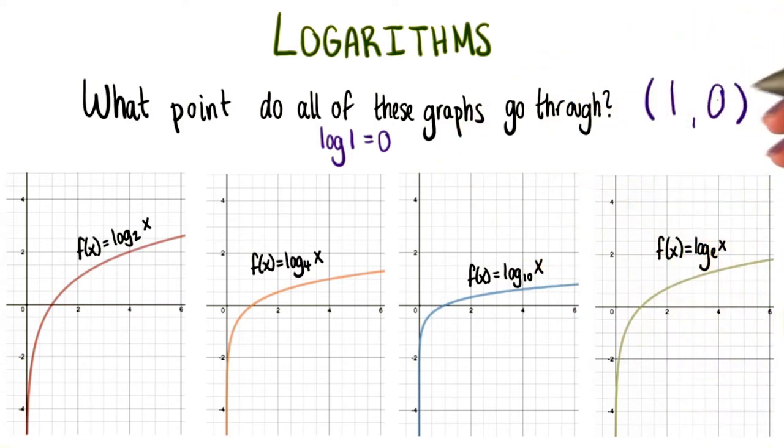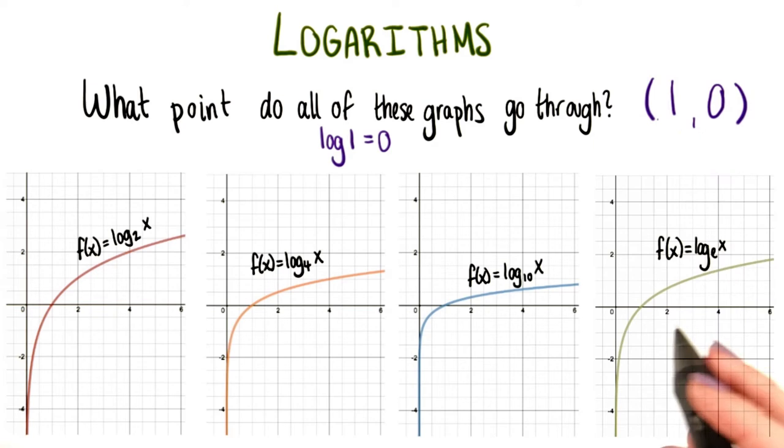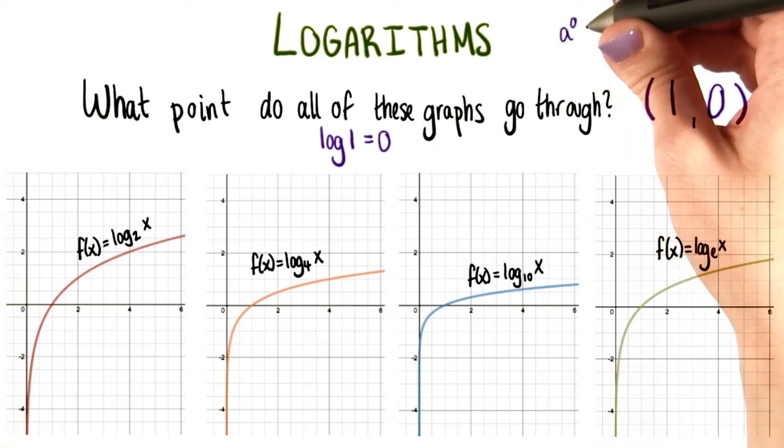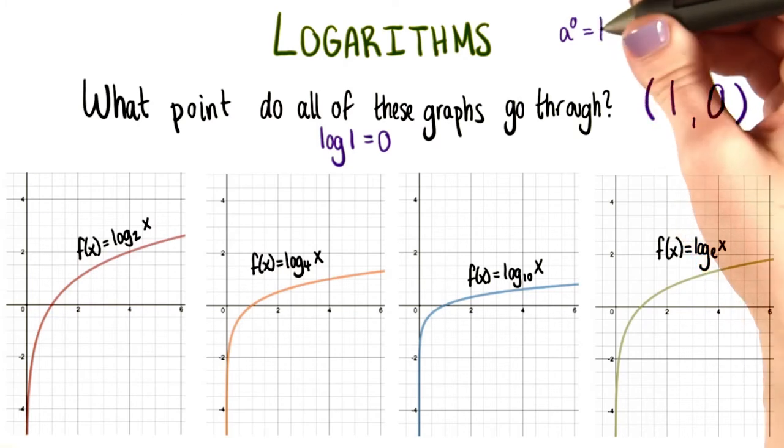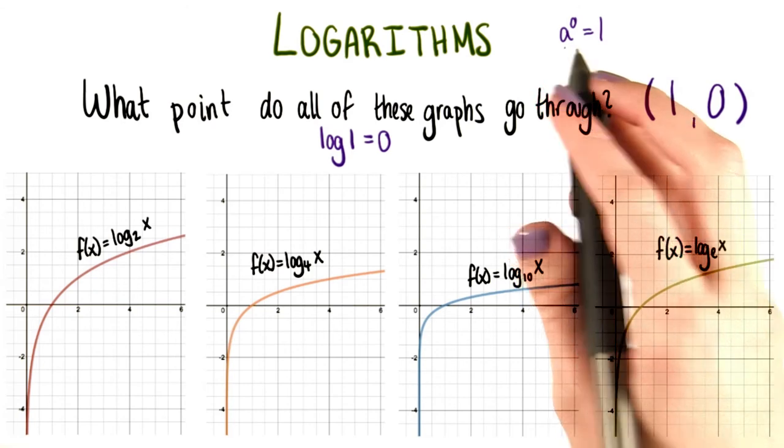And that gives us the point (1,0). This corresponds to the point on the exponential function graph. Since as we saw before, a to the 0 is always equal to 1, regardless of what a is. Unless it's 0, since 0 to the 0 is not defined.